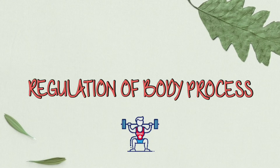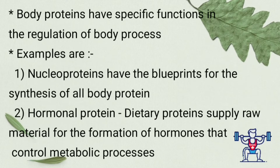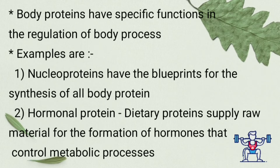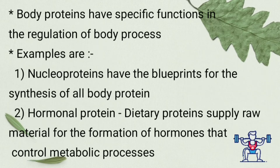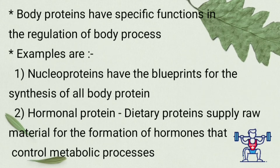Regulation of body process. Body proteins have an important role in the regulation of body processes. For example, nuclear proteins contain blueprints for the synthesis of all body proteins. Next, hormonal proteins — body proteins provide raw material for the synthesis of hormones that control many processes in our body.